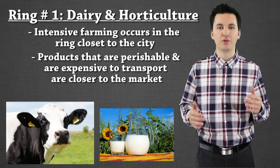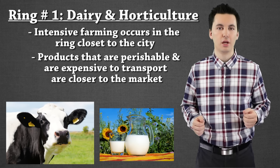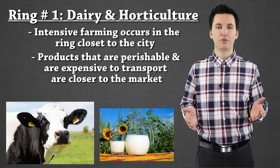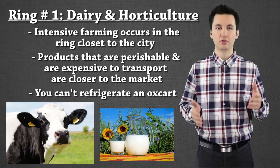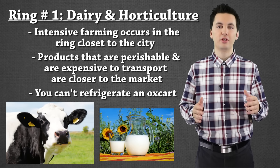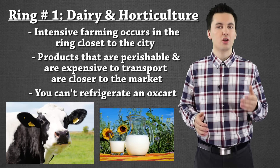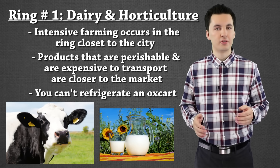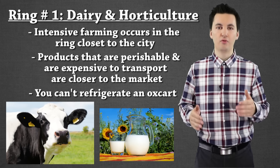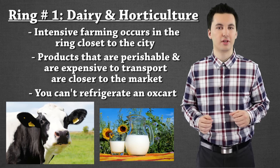The more technology we have, the larger this milk shed can be because you can produce farther away. Back then, when this model was created, we didn't have refrigeration — milk spoiled very fast, so you had to get it to market pretty quick. This is why it was located so close to the city. It was also expensive and hard to transport, so for farmers to make any profit, they had to have it right next to the city.